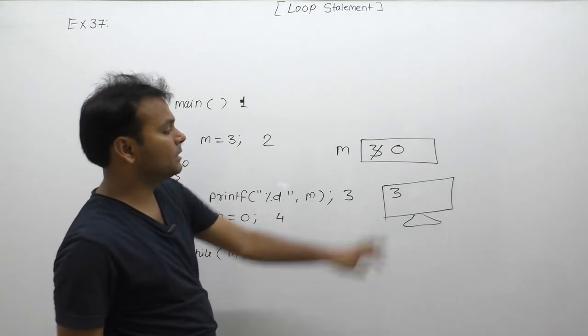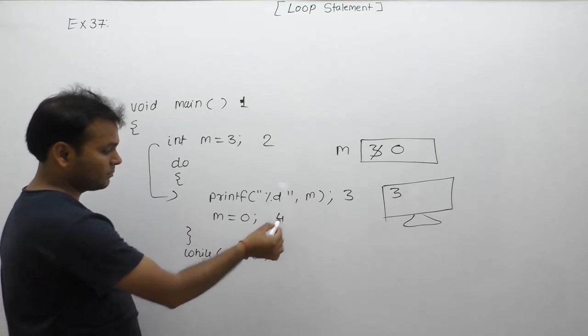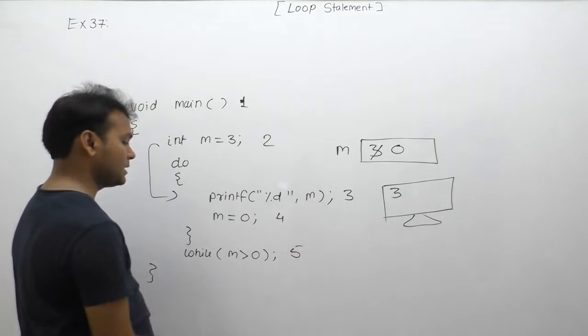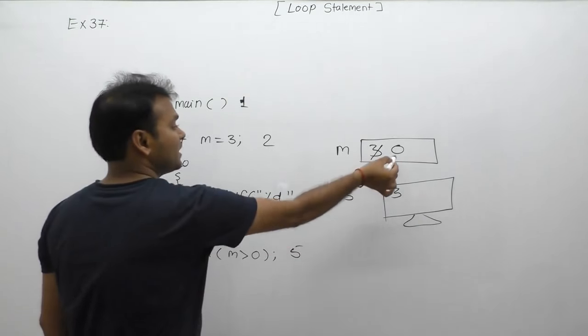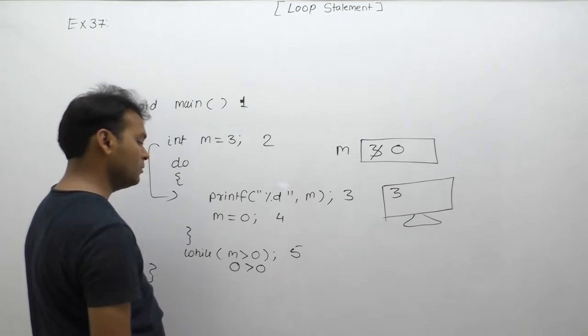Next, the while condition is tested. The condition checks if m, which has current value 0, is greater than 0. The condition 0 greater than 0 is false.